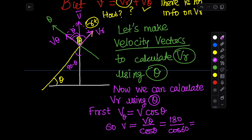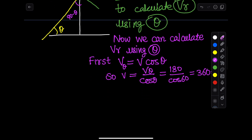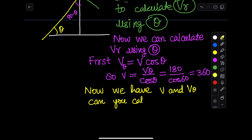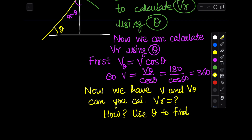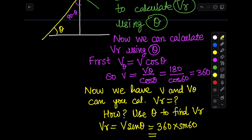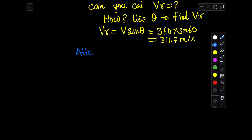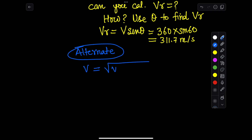Since v-theta is already known, we can easily find the total velocity v. We can also calculate vr because both v and v-theta are known. A simple expression gives: vr equals v times sine theta. Alternatively, you can use the formula: v equals the square root of (vr-squared plus v-theta-squared).